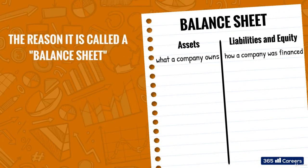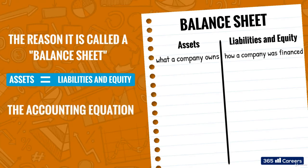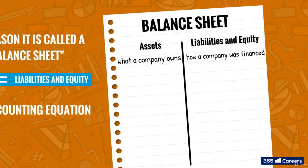The reason it is called a balance sheet is because assets must equal liabilities and equity. The two sides have to be equal or else a mistake has been made. This principle is known as the accounting equation and is one of the core principles around which accounting has been built. Assets are equal to liabilities and equity.